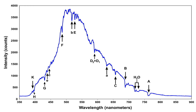Inhomogeneous broadening is a general term for broadening because some emitting particles are in a different local environment from others, and therefore emit at a different frequency. This term is used especially for solids, where surfaces, grain boundaries, and stoichiometry variations can create a variety of local environments for a given atom to occupy. In liquids, the effects of inhomogeneous broadening are sometimes reduced by a process called motional narrowing.